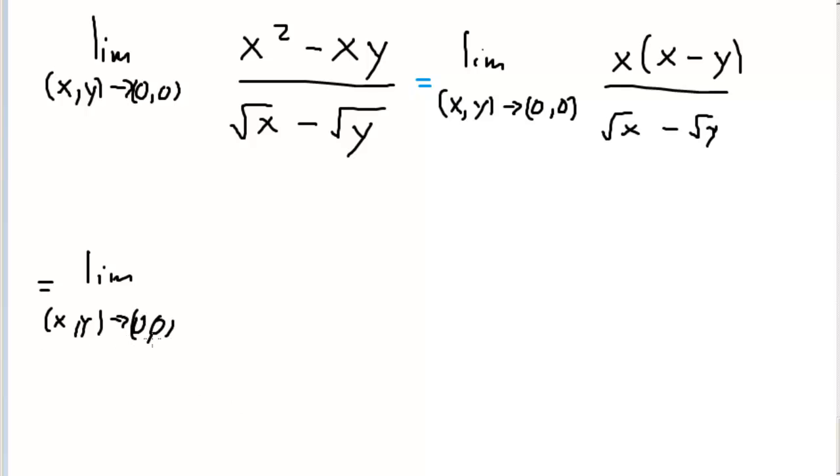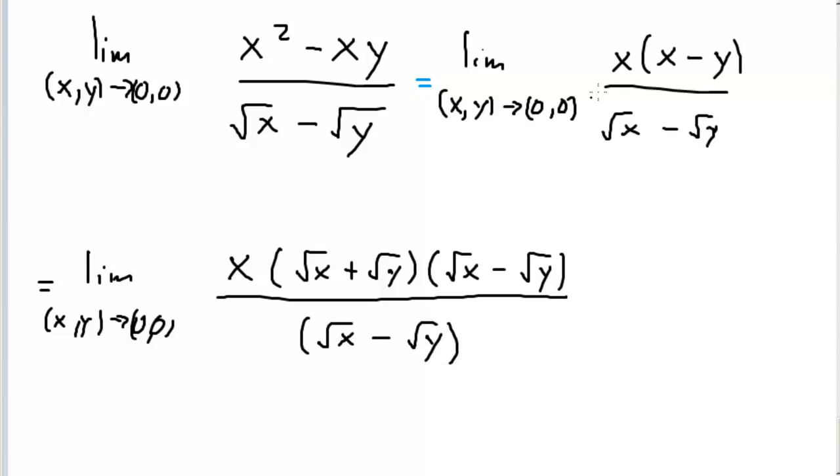Please get in the habit of writing this—without this, you're not taking the limit, you're just doing algebraic manipulations on an expression. So x times (square root x plus square root y) times (square root x minus square root y), all over square root x minus square root y. How did I know to do this? This is just an algebraic factoring technique, recognizing the difference of squares.